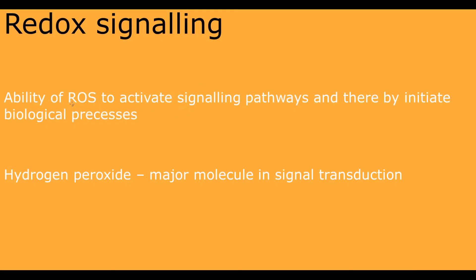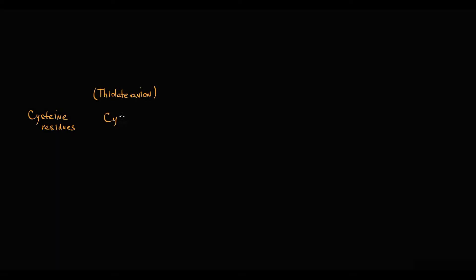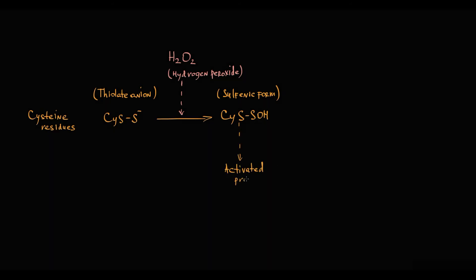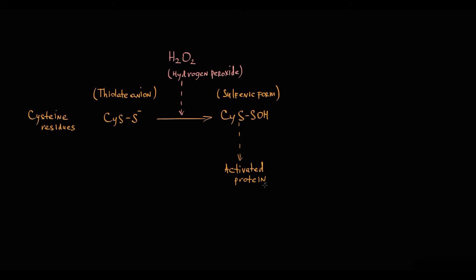Redox signaling is the ability of reactive oxygen species to activate signaling pathways and thereby initiate biological processes inside the cell. Reactive oxygen species can function as signaling molecules that regulate physiological processes. The major molecule involved in signal transduction is hydrogen peroxide. The mechanism of redox signaling is based on a specific feature of hydrogen peroxide: it can oxidize cysteine residues within proteins. Cysteine residues at physiological pH exist as thiolate anions, and hydrogen peroxide can oxidize thiolate anions to sulfenic form, inducing changes in protein structure that alter protein function — essentially activating the protein.